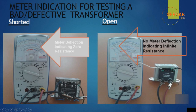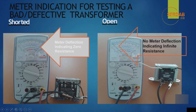To test a good transformer, measure the resistance of both primary and secondary windings. If the meter reads zero resistance, the transformer winding is shorted. If the meter shows infinite resistance, there is a cut or open in the winding. To identify which terminals are primary and secondary, look up the transformer part number on Google and find its datasheet to identify the numbered terminals.